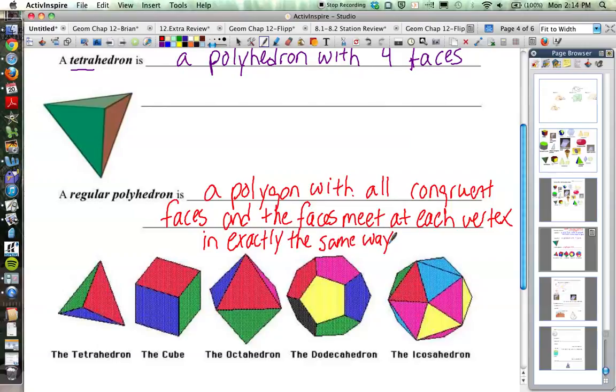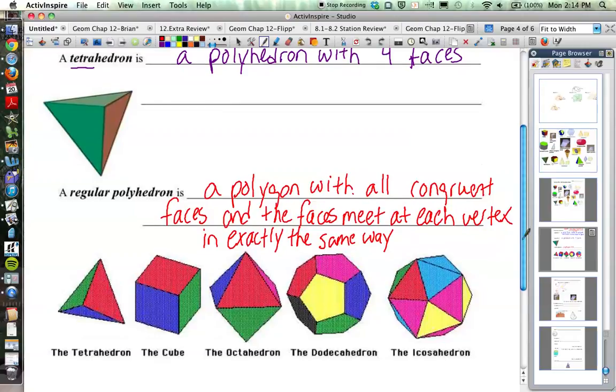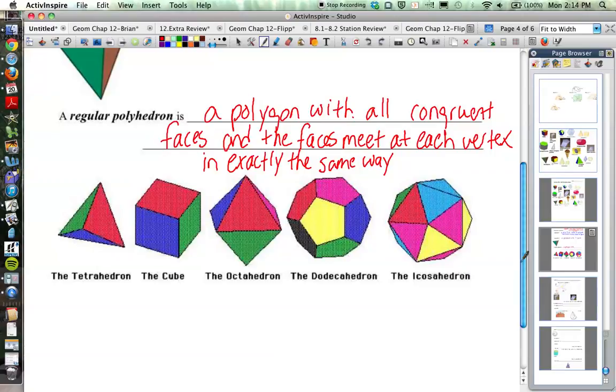So below here, we have a bunch of regular polyhedrons. And notice that we have that tetrahedron again. And what's different about these is that all of their faces are congruent. So all four faces of this tetrahedron are all congruent triangles. And all four faces of this cube right here are all squares.